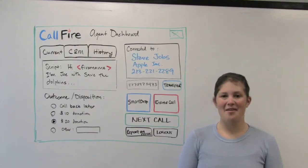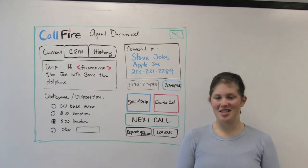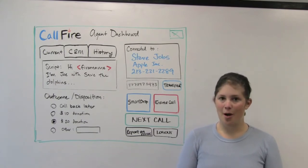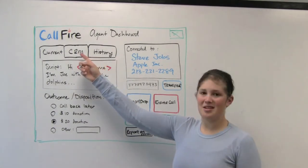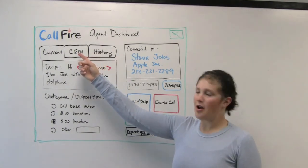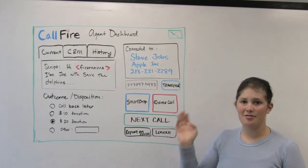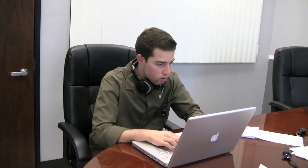If you want agents to have the option of seeing a website while they're on the phone, insert a URL into the Excel spreadsheet that you use to upload your contacts and that specific website will show up in the tabs above. It can be a CRM page for the specific client that's on the phone, or it could be as simple as a company website.